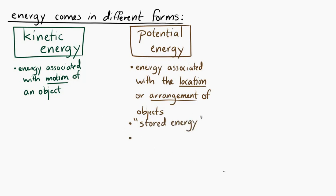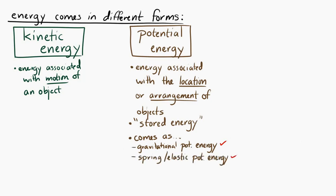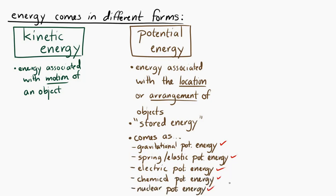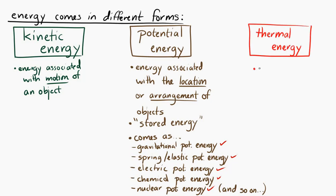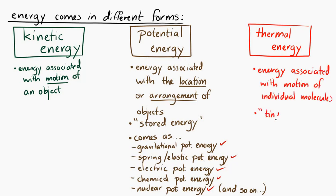There are many different types of potential energy. There's gravitational potential energy, which we will use a lot in this class. There's spring or elastic potential energy, which we will also use. Then there's electric potential energy, which we'll see later on. There's chemical potential energy, which you deal with a lot in chemistry, and nuclear potential energy as well. The third big category is thermal energy — the energy associated with the motion of individual molecules, so it's molecular-level kinetic energy. That's a big deal in chemistry, and we'll see it in thermal physics as well.